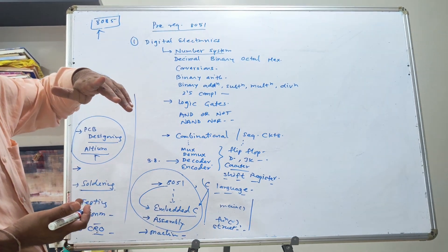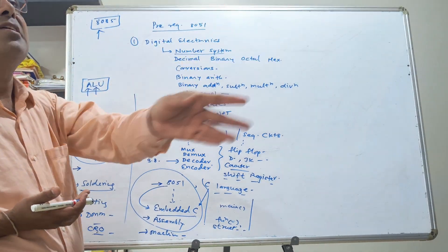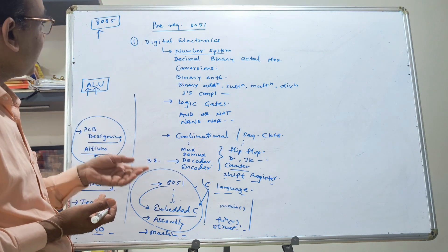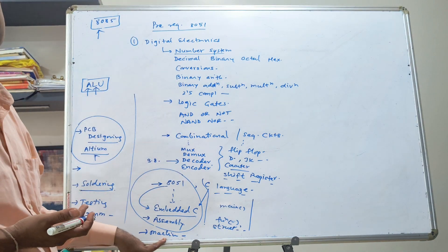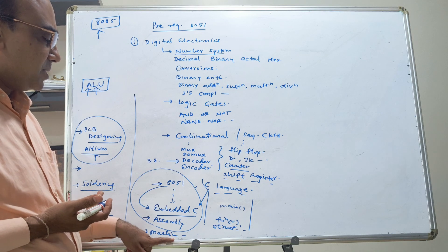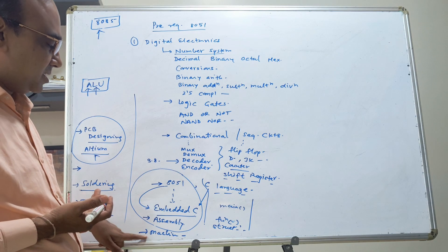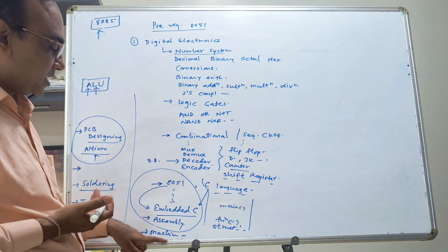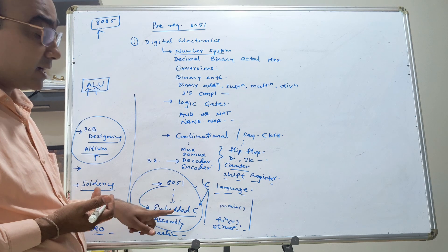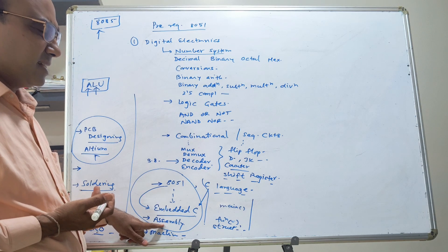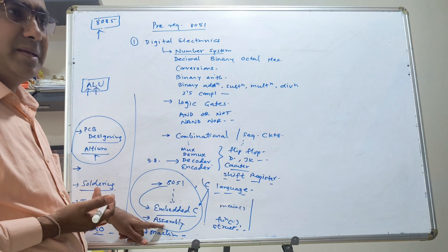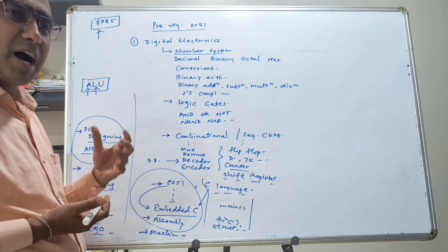And we then used to tell 8085 that start executing from this line. So at that time we were writing program literally in the machine language. But writing program in machine language is a tedious task. That's why we use assembly language. Again, assembly needs greater details. Assembly needs knowledge of hardware and it is not so much easy to write a program in assembly language.